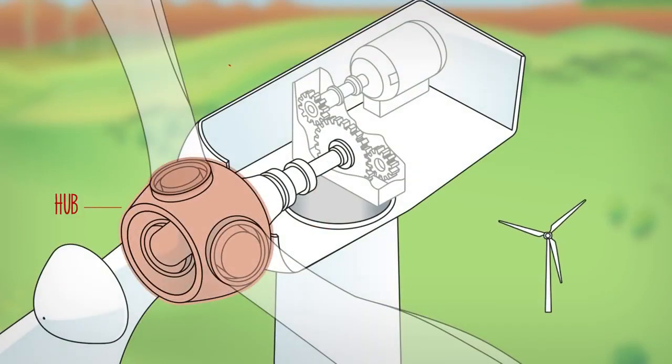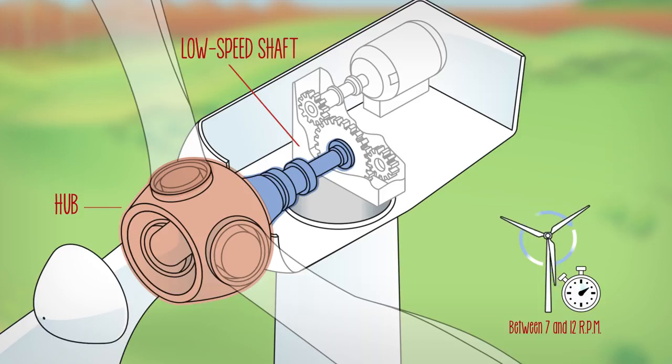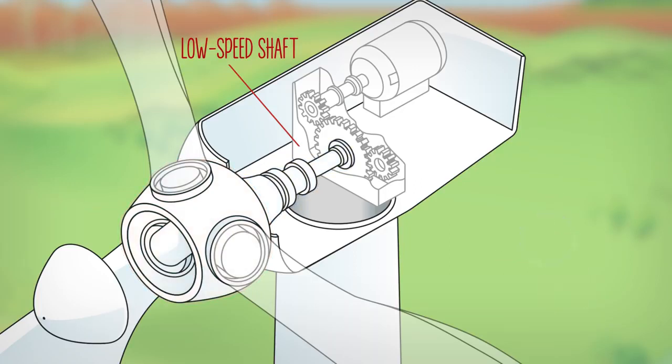The blades are attached to the wind turbine through the hub, which is coupled to the low speed shaft. The low speed shaft is given this name because it spins at the same speed of the blades, between 7 and 12 revolutions per minute. To produce electricity, it is necessary to increase the turning speed of the low speed shaft.